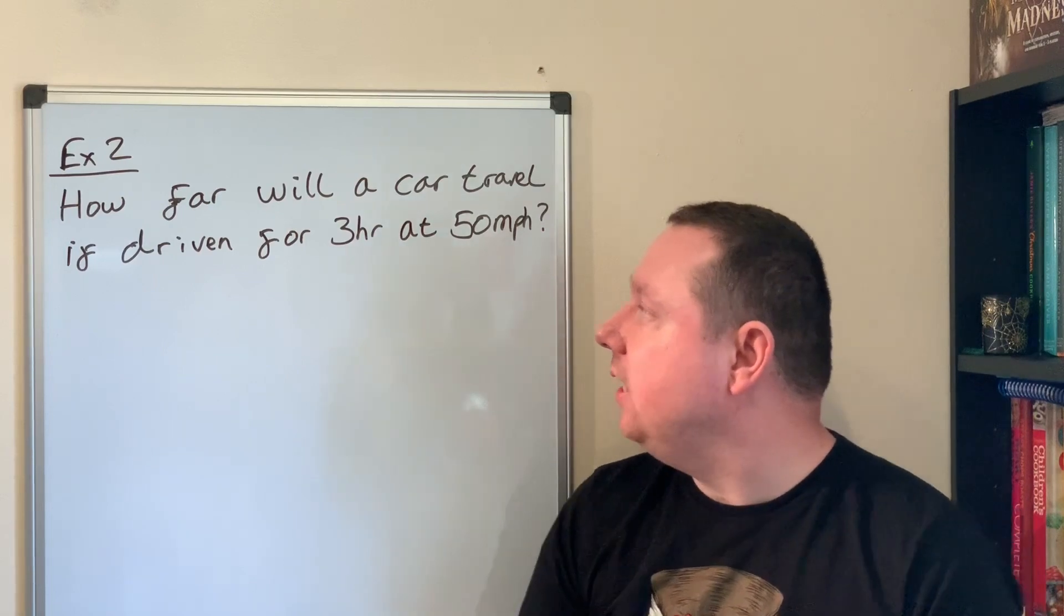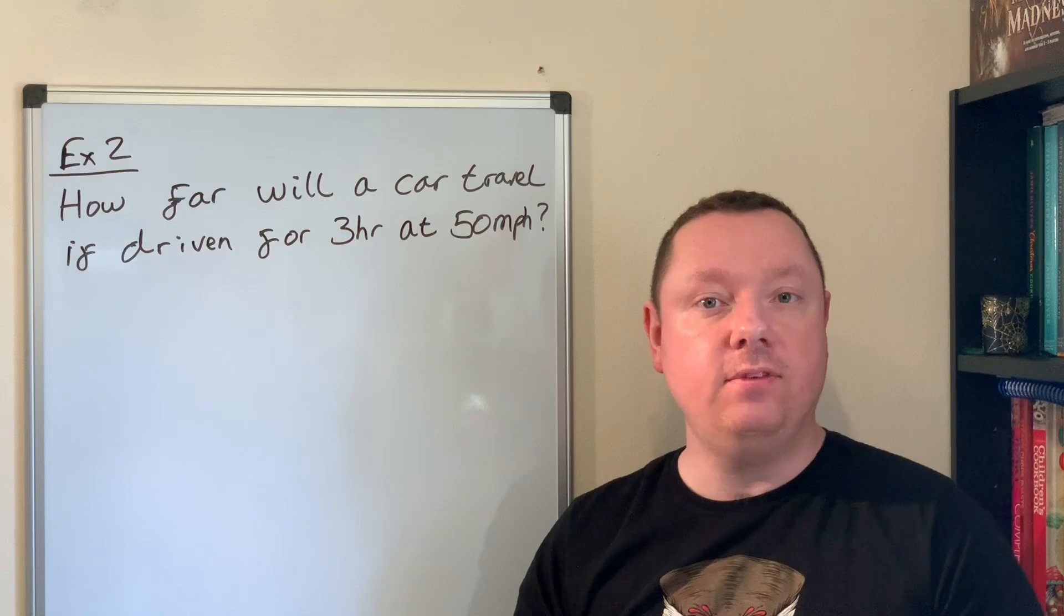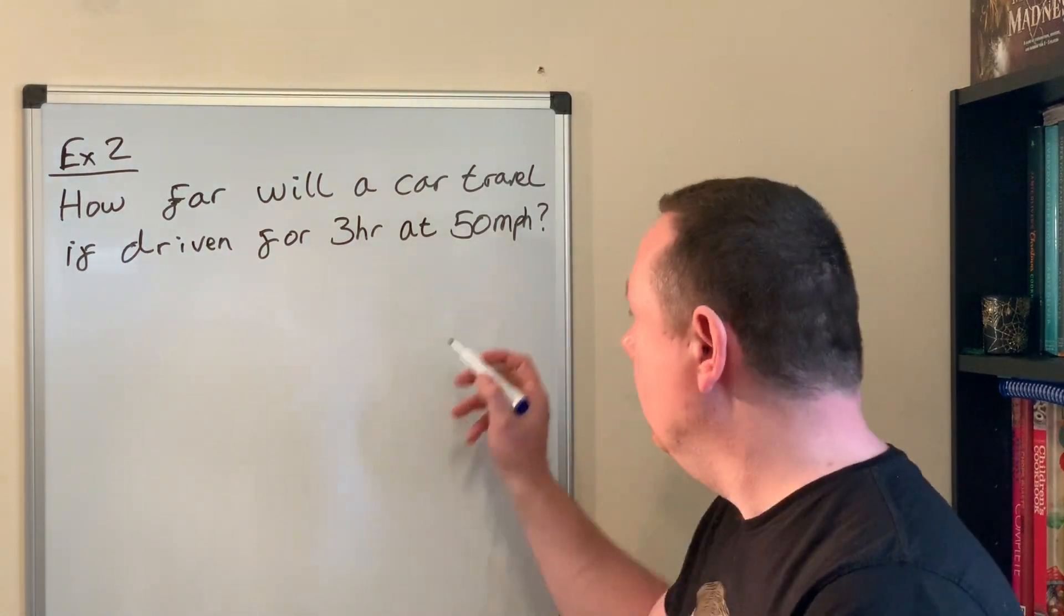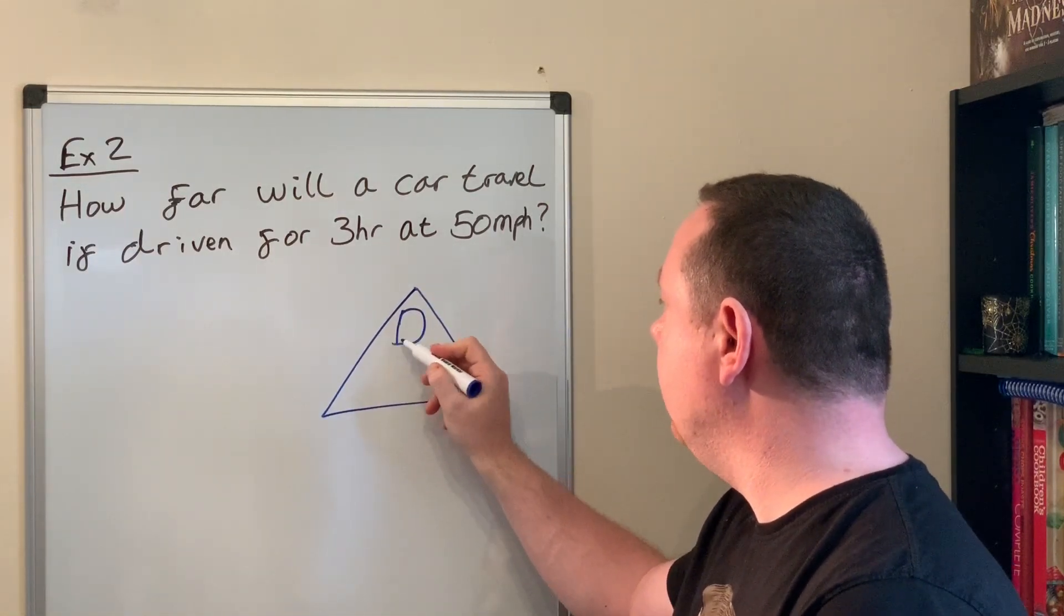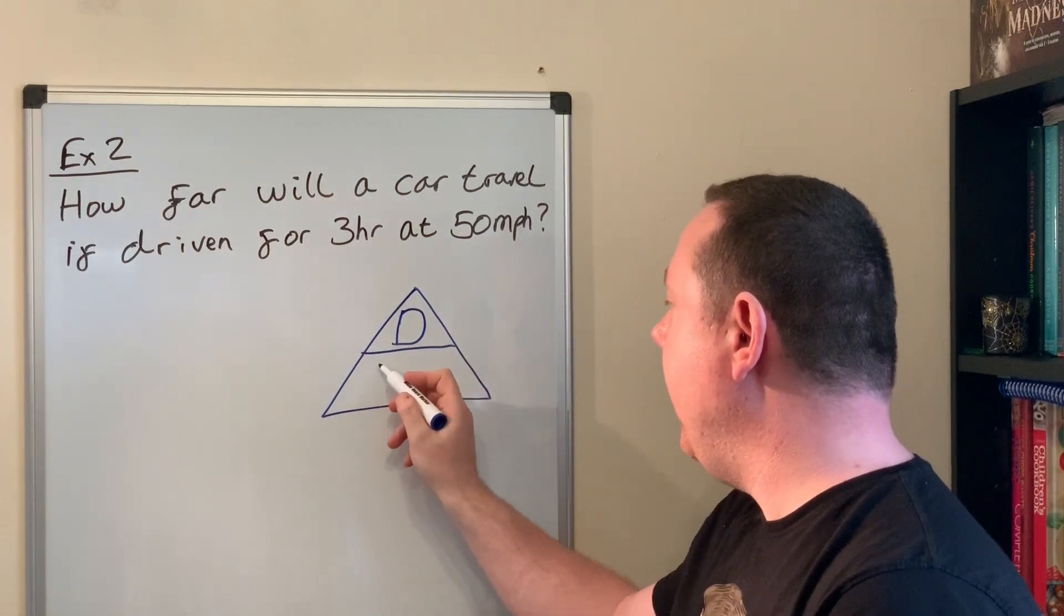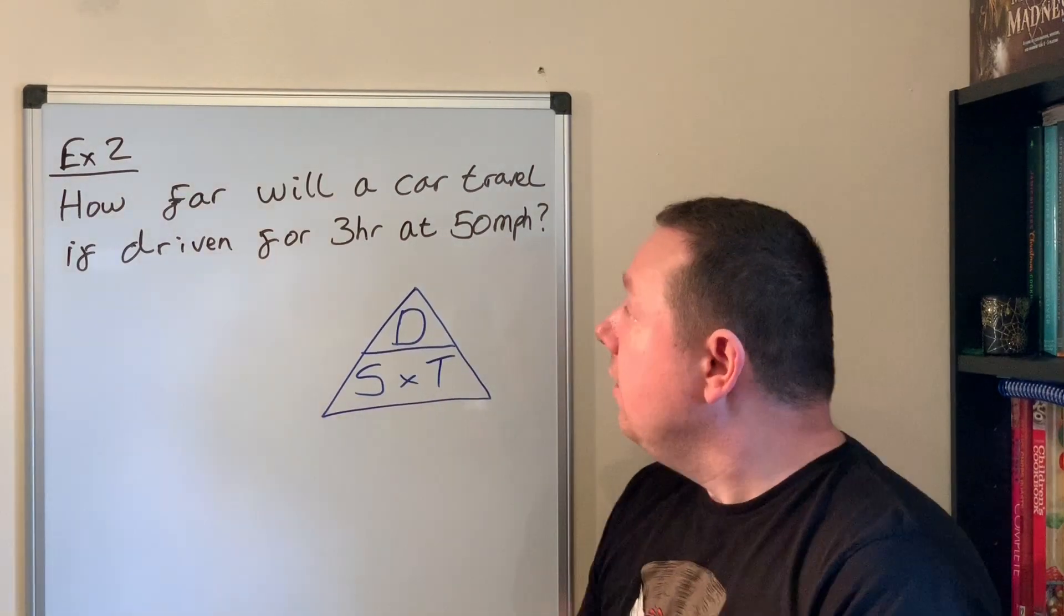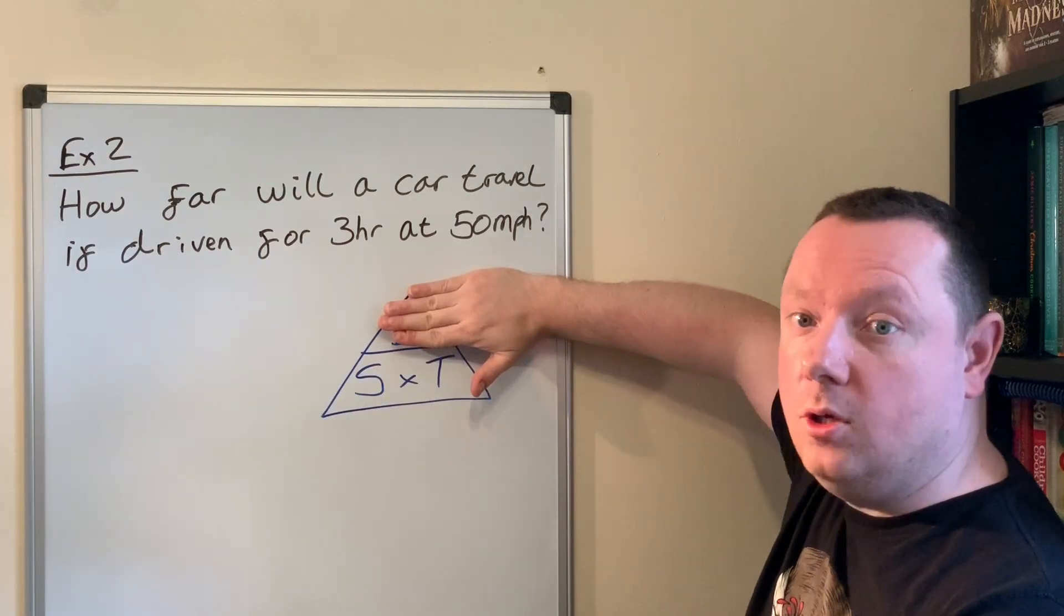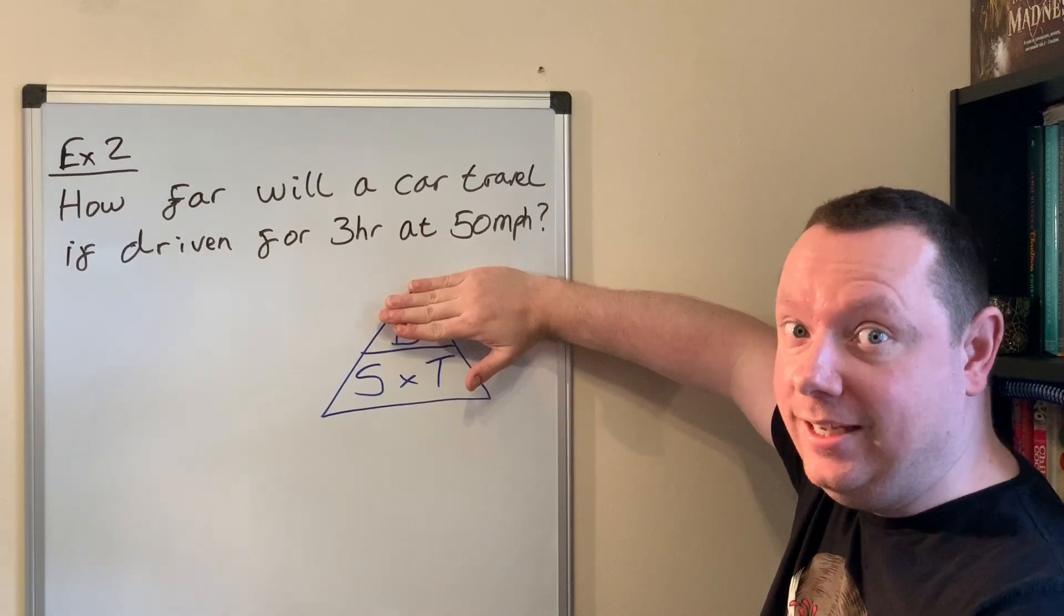Example two: How far will a car travel if driven for three hours at 50 miles per hour? Step one is the same - we draw a triangle. D goes at the top for distance over S times T. This time, 'how far' means distance, so I cover distance up and it shows S times T. So I write D equals S times T.